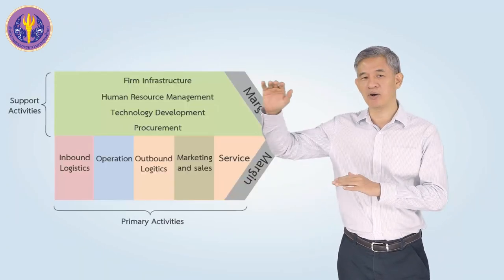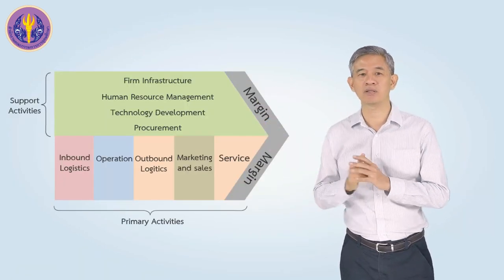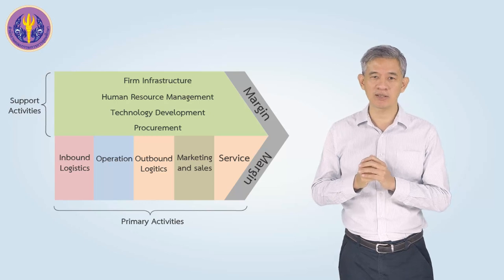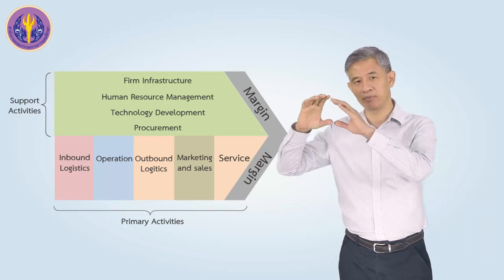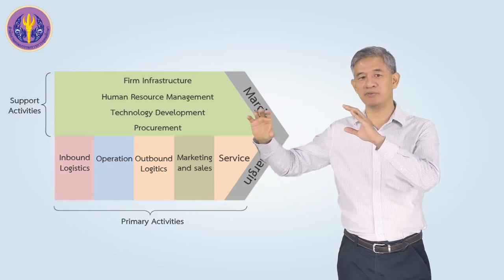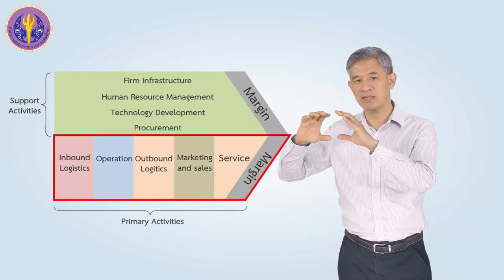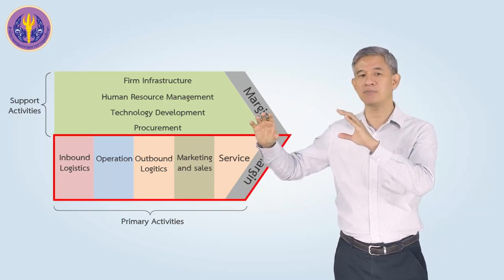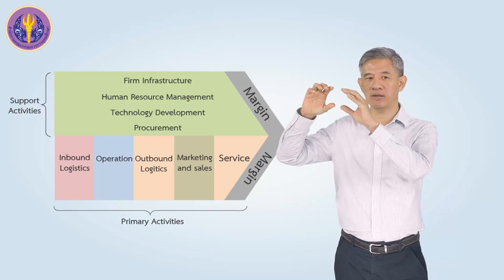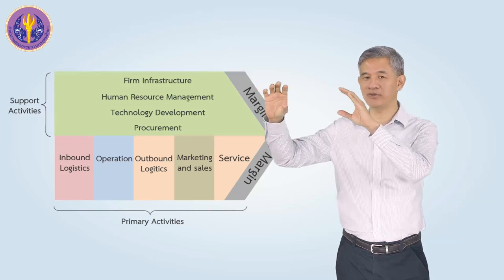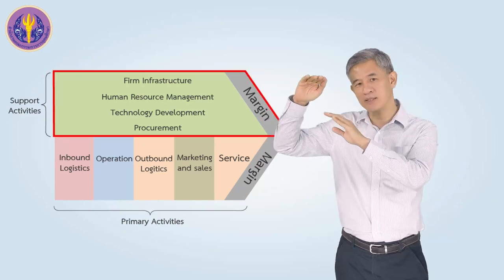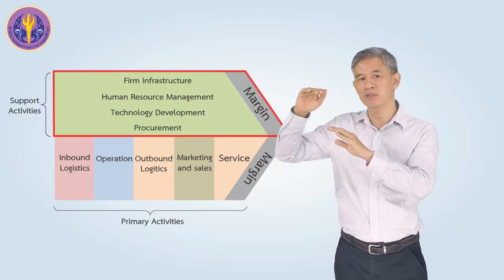If we talk about the value chain of Michael E. Porter, we will see that there is primary activity and support activity. The main activity is the new business of the business.